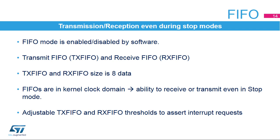The LP UART can operate in FIFO mode, which is enabled and disabled by software. It's disabled by default. The LP UART comes with a transmit FIFO called TX-FIFO and a receive FIFO called RX-FIFO, each being 8 data deep. The TX-FIFO is 9 bits wide. The RX-FIFO default width is 12 bits, due to the fact that the receiver not only stores the data in the FIFO but also the error flags associated to each character, like parity error, noise error, and framing error flags.